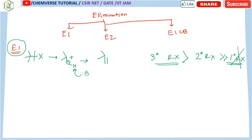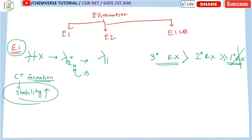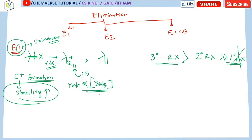Primary alkyl halides practically give no E1 elimination. From this mechanism we can see that carbocation formation is important — carbocation formation occurs and carbocation stability should be higher in order to give the E1 reaction. E1 stands for unimolecular, because the first step — breaking the bond between the carbon and the leaving group — is the rate-determining step, so the rate depends solely on the concentration of the substrate.